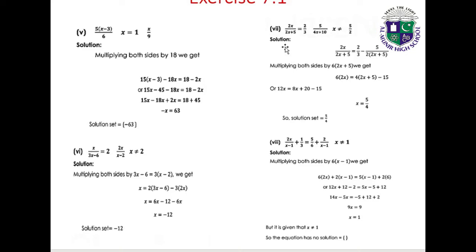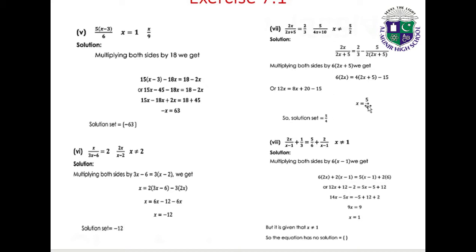Part 7: 2x/(2x plus 5) equals 2/3 minus 5/(4x plus 10), where x is not equal to minus 5/2. Multiplying both sides by 6(2x plus 5): 6(2x) equals 4(2x plus 5) minus 15. Solving gives x equals 5/4. Solution set: {5/4}.